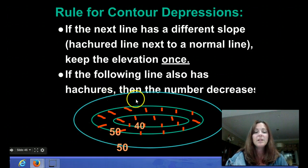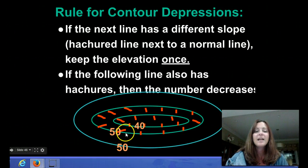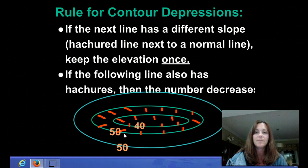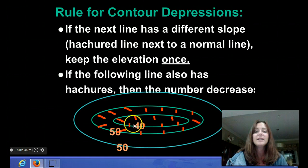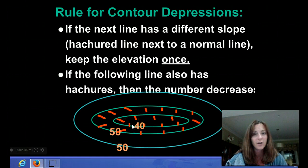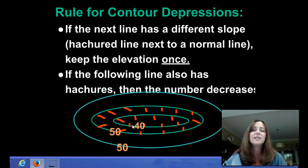This normal line here, the elevation is 50, and it's indicated on the map. The next line is a hatcher mark. So following our rules, this number is going to stay the same. And once this starts to go down into the hill, indicated by the other hatcher marks, we're going to start to decrease the elevation, so it'll go down to 40.